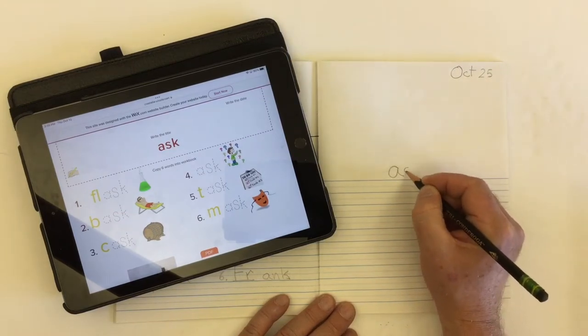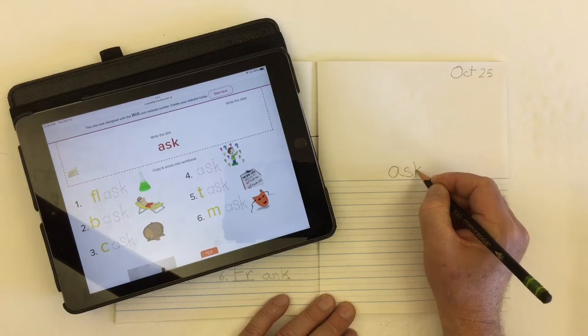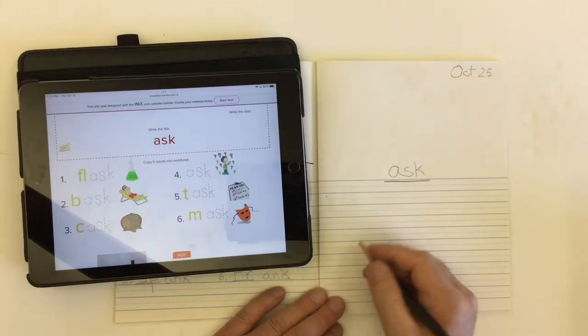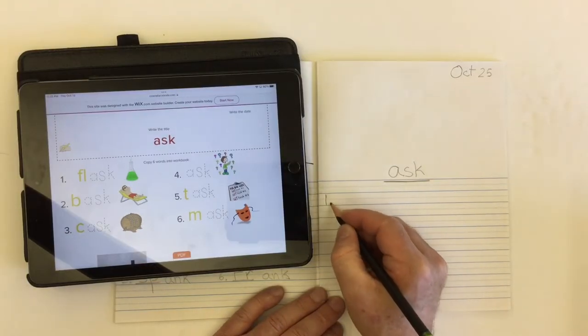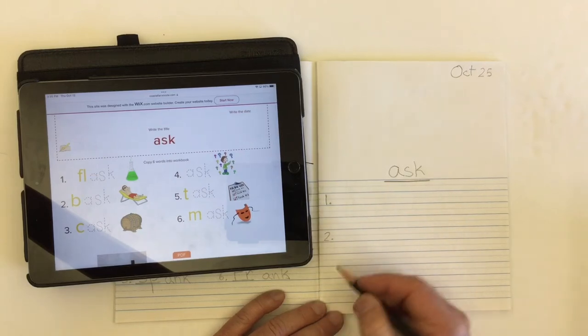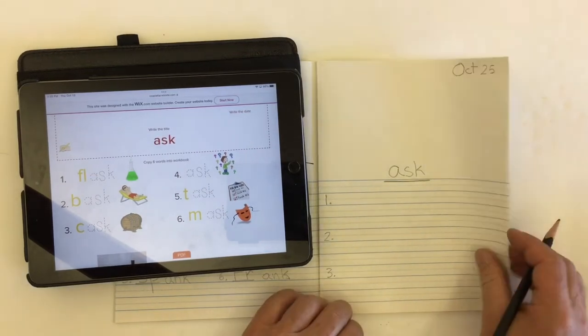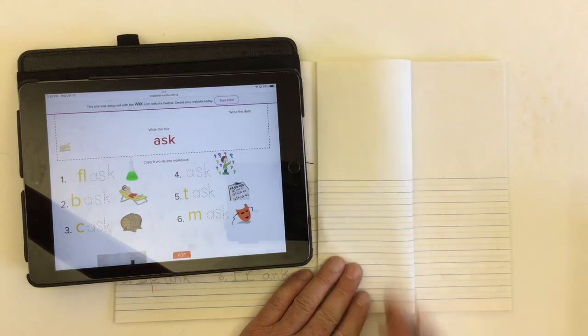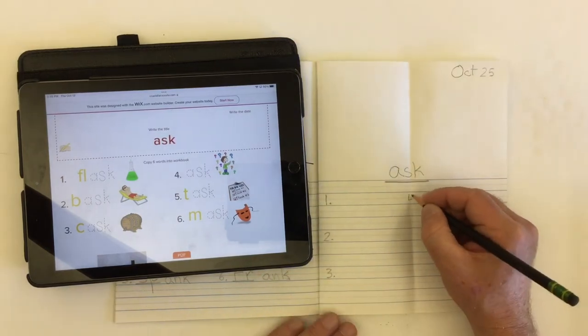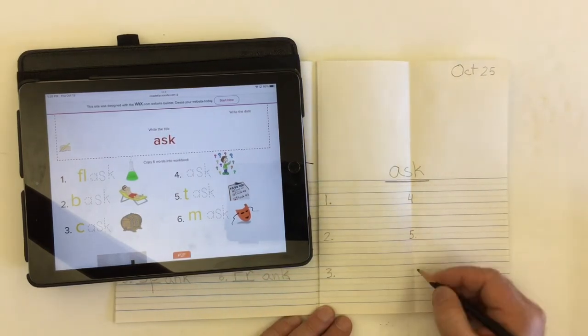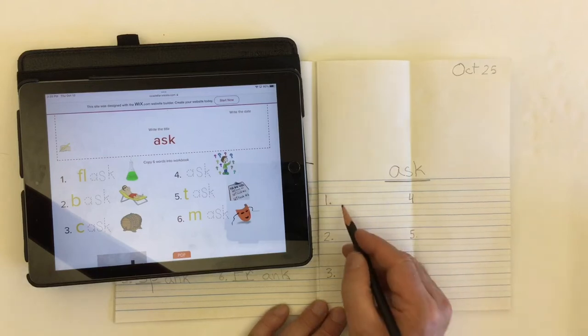We can set our numbers up for our words: one, two, three. If I fold my page down the middle, I can put four, five, and six.